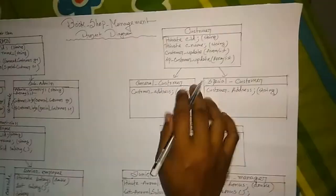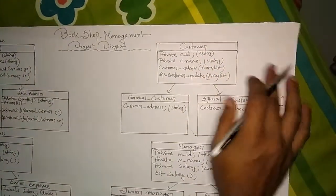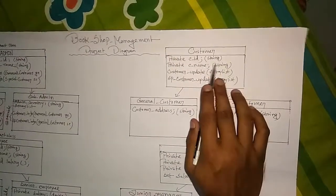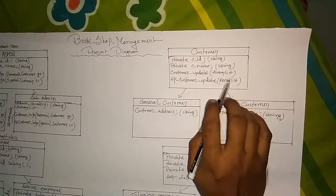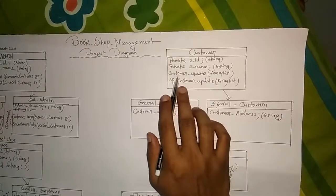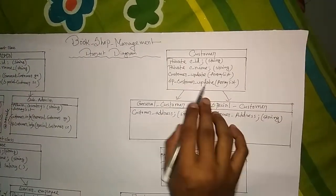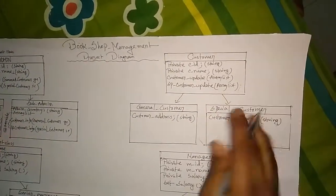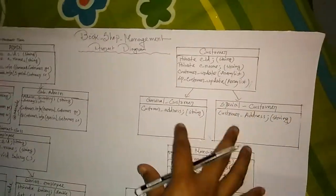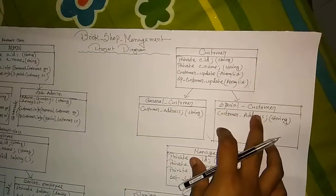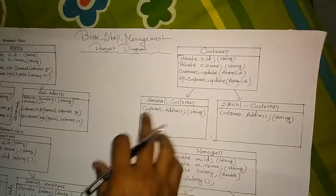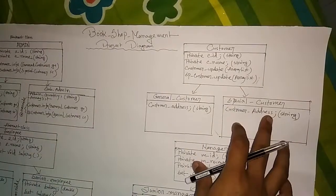Next is the customer class. Here are two variables declared in private: customer ID and customer name. Here are also two methods: customer update and spcustomer update. There are two child classes of customer class — one is general customer and special customer. Here are two new variables declared: customer address and customer address.